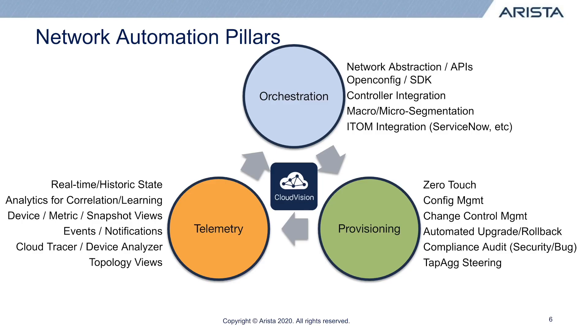Next up, we have zero-touch provisioning — the ability to onboard switches into the network or replace them very easily and very quickly. Rather than the traditional method of plugging a switch in, plugging in the console port, plugging in a terminal emulator on a laptop, and then putting in the initial configuration so it can be accessed from the network — with zero-touch provisioning, you would just plug the switch in, power it on, it would get auto-discovered through Cloud Vision, and you could onboard it and start giving it configurations directly from Cloud Vision.